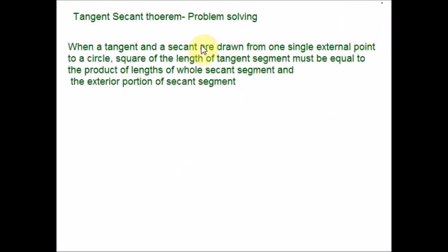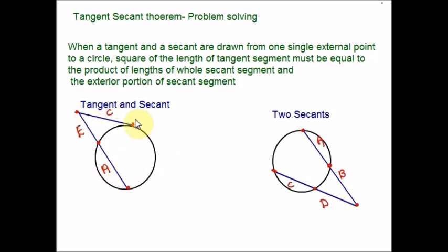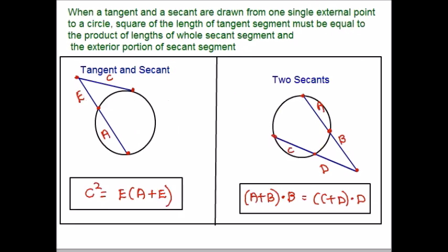According to tangent secant theorem, when a tangent and a secant are drawn from one single external point to a circle, the square of the length of the tangent segment must be equal to the product of the length of the whole secant segment and the exterior portion of secant segment. I have drawn the figure and mentioned the lengths. You can compare the statement and the figure with the formulas for better understanding.